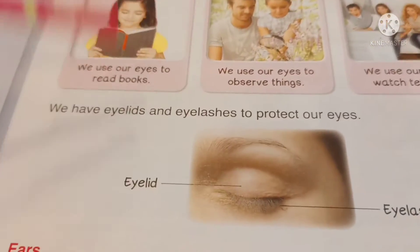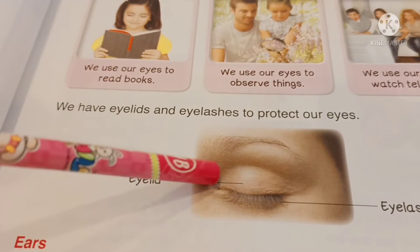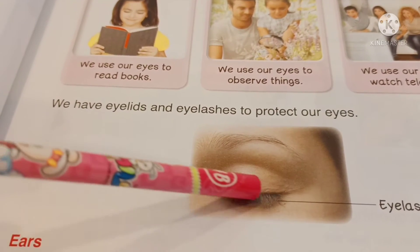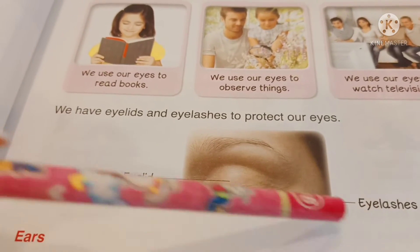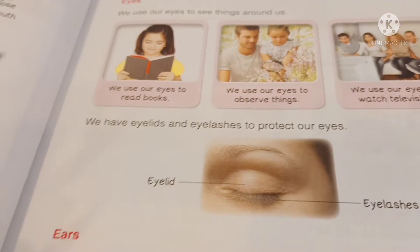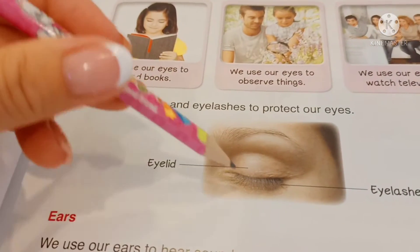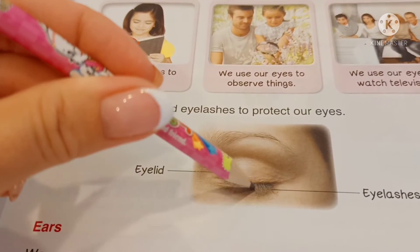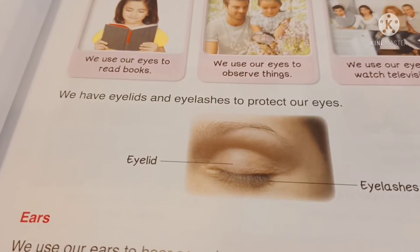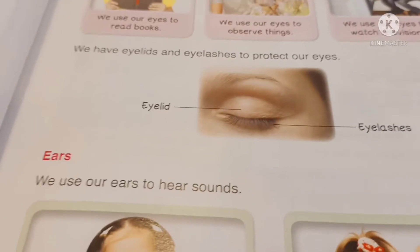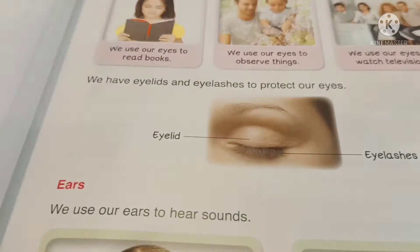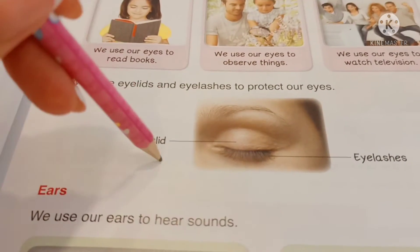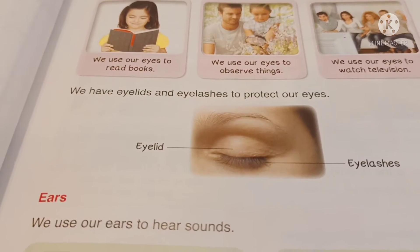We have eyelids — this is the eyelid. And eyelashes — somebody has very long eyelashes, somebody has short. So, what are they for? To protect our eyes. Eyelid and eyelashes protect our eyes.